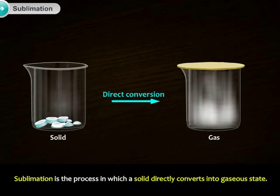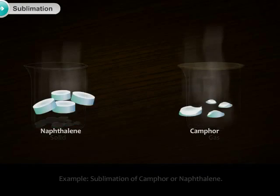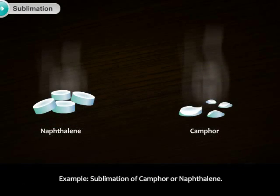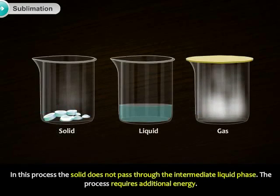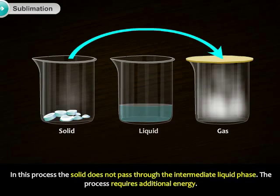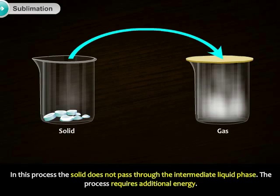Sublimation is the process in which a solid directly converts into gaseous state. For example, sublimation of camphor or naphthalene. In this process, the solid does not pass through the intermediate liquid phase. The process requires additional energy.